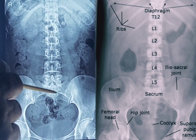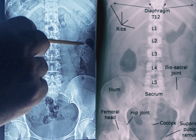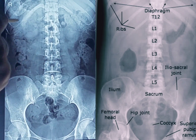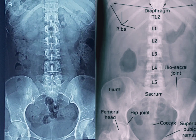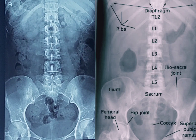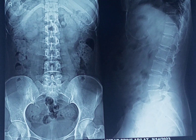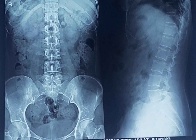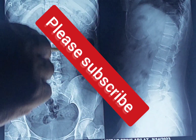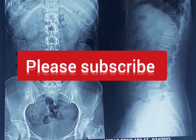We can see some black areas, or radiolucent areas, distributed throughout the abdomen. All these are gas shadows — gas within the different parts of the intestine. This shadow looks black because of its radiolucency. These are the more or less important features of the anteroposterior view of the abdomen including the pelvis.